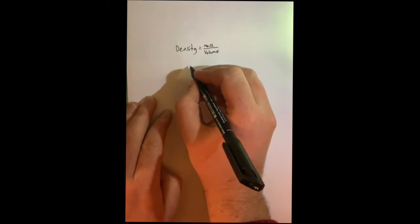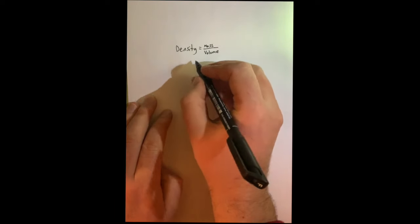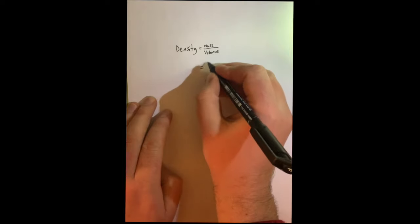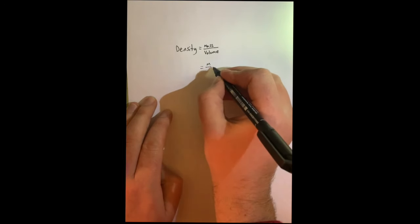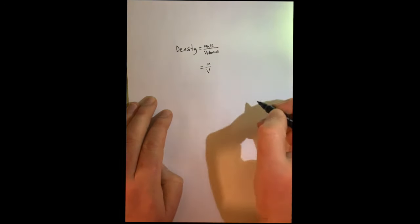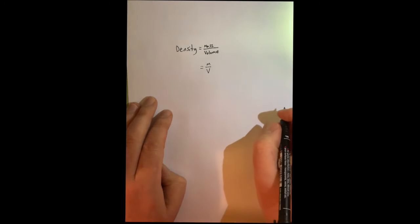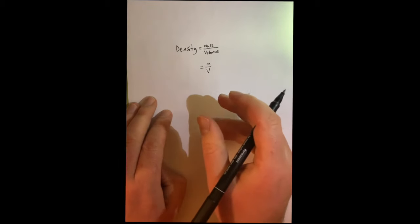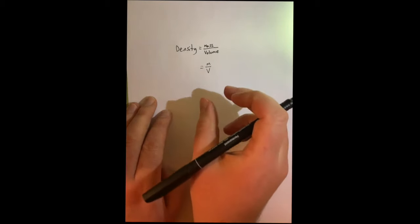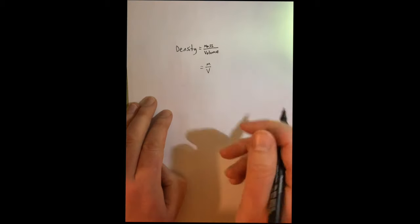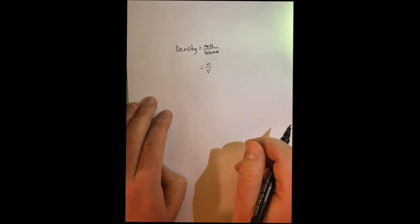So we've got standard symbols for all of these quantities. The standard symbol for mass is a lowercase m and the standard symbol for volume is a capital V. The examiner probably won't notice if you do a lowercase v or a capital M, but just be careful because that is what it should be. But of course, in an exam, it will say write down the formula that links, and if it's mass, it'll say brackets, lowercase m. So you just copy what they've given you in the paper.